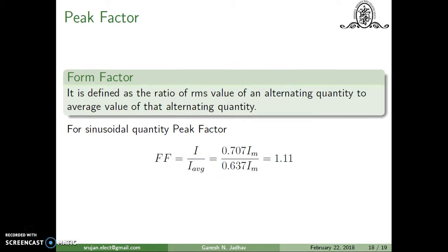Next we define the form factor. It is defined as the ratio of the RMS value to the average value of the alternating quantity. For a sinusoidal quantity, RMS = 0.707·Im and average = 0.637·Im, so Im cancels and the form factor = 0.707/0.637 = 1.11. This form factor is always equal to 1.11 for the sinusoidal quantity, but for non-sinusoidal waveforms it may be different.